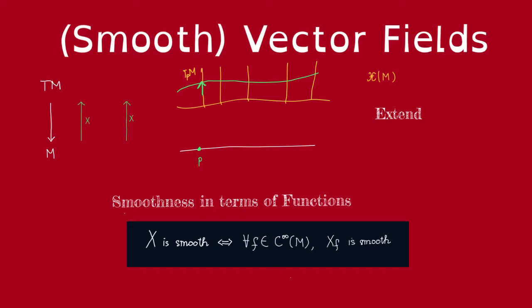So now we want to talk about vector fields. Recall that a vector field on a manifold M is just a section of the tangent bundle on M. In other words, it's a map that assigns to every point P in M a tangent vector over P, a tangent vector in the tangent space to M at P.